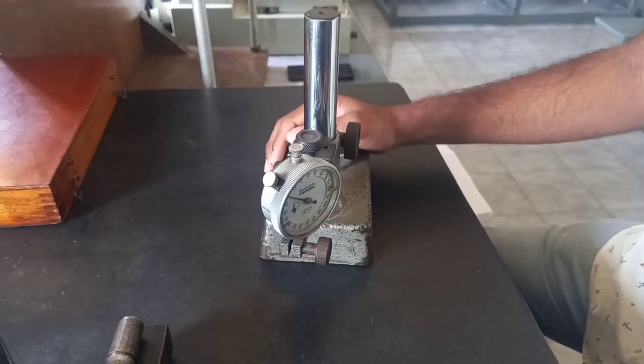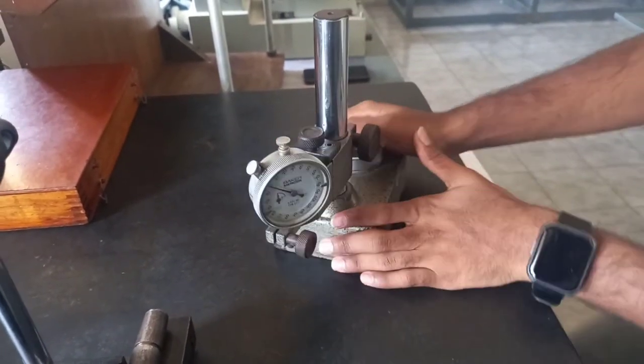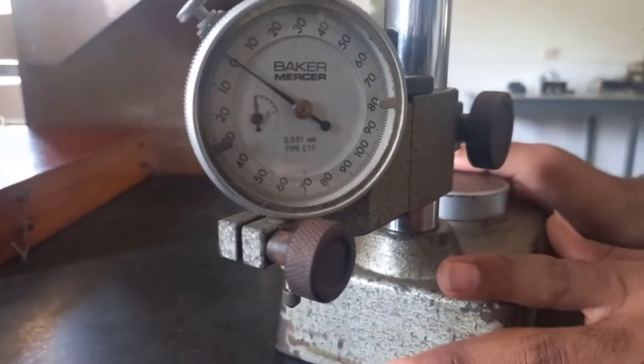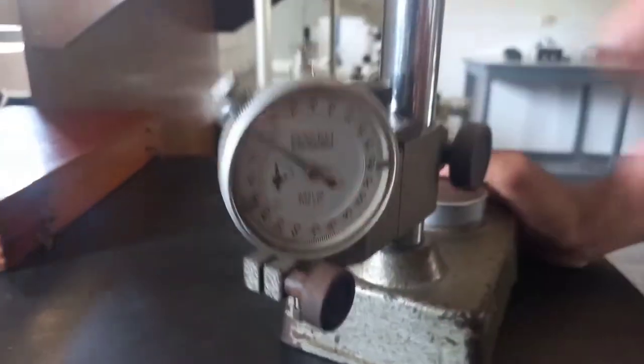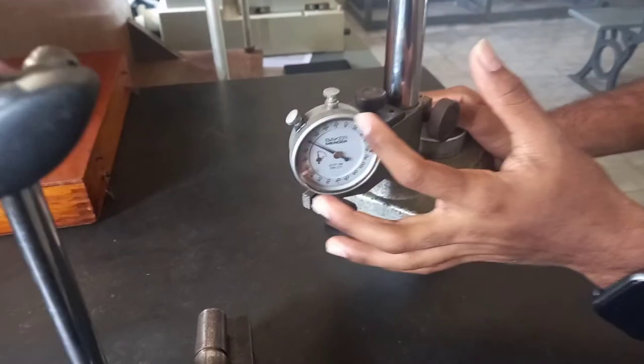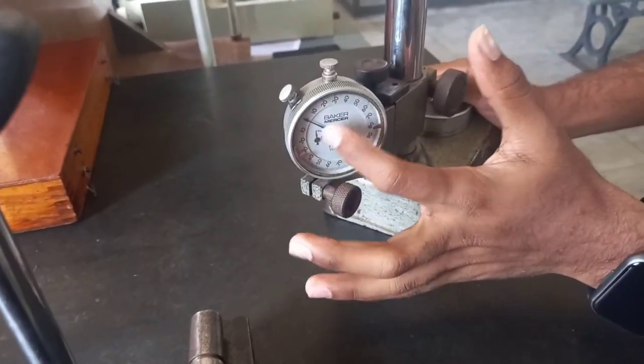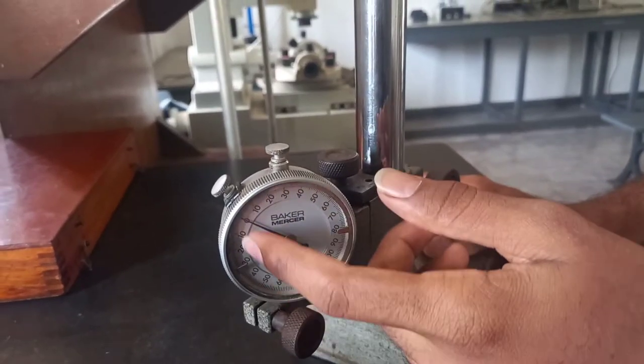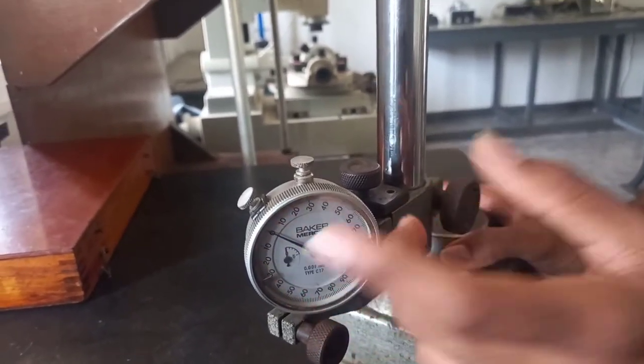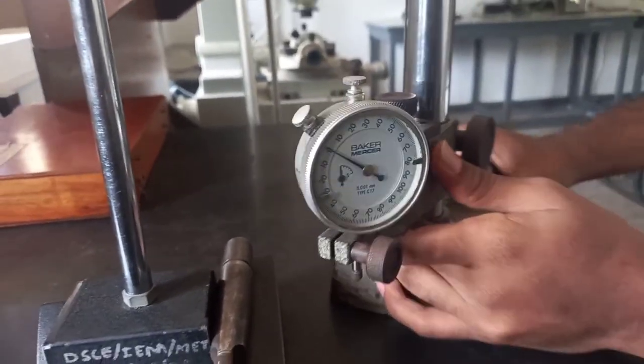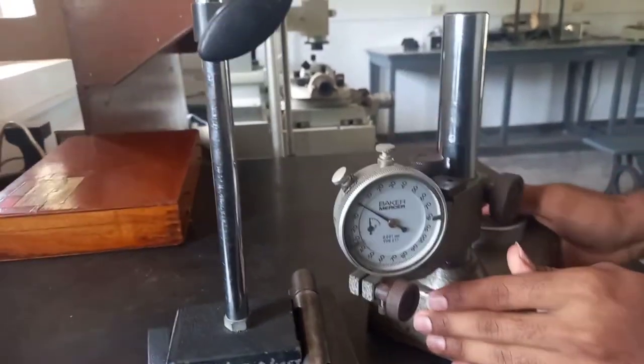So now hold it stiff and turn on the magnetic stand. After this take the dial gauge, and we have the least count of this dial gauge as 0.001 mm. It has 200 divisions inside the dial gauge, so one revolution of this needle makes 200 microns. First we will place it on the minor diameter side.